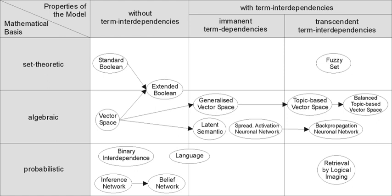For effectively retrieving relevant documents by IR strategies, the documents are typically transformed into a suitable representation. Each retrieval strategy incorporates a specific model for its document representation purposes. The models are categorized according to two dimensions: the mathematical basis and the properties of the model.